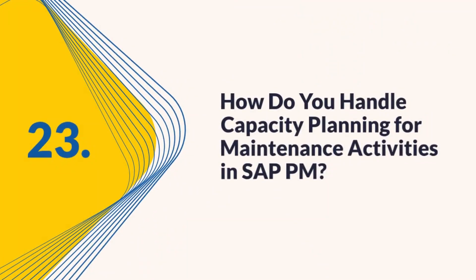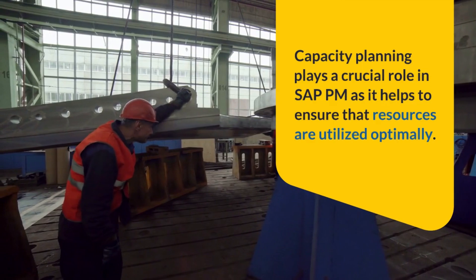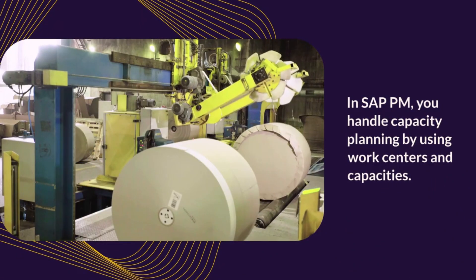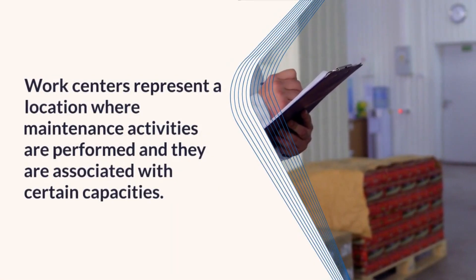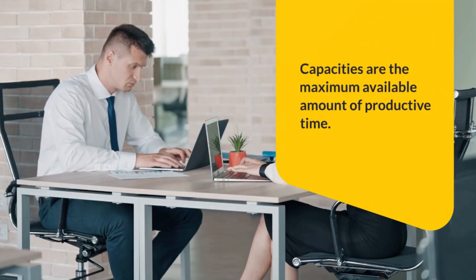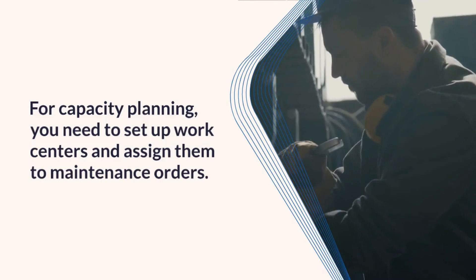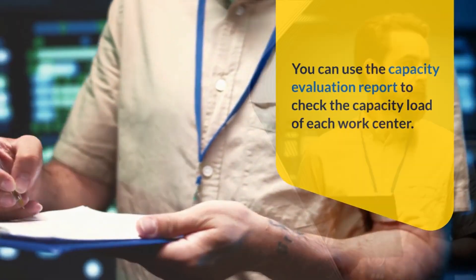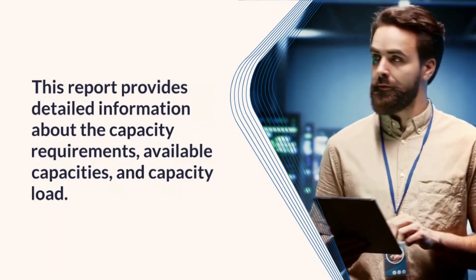Question 23: How do you handle capacity planning for maintenance activities in SAP PM? Capacity planning plays a crucial role in SAP PM to ensure resources are utilized optimally. You handle capacity planning by using work centers and capacities — work centers represent locations where maintenance activities are performed and are associated with certain capacities, which represent the maximum available amount of productive time. For capacity planning, set up work centers and assign them to maintenance orders. Use the capacity evaluation report to check the capacity load of each work center, providing detailed information about capacity requirements, available capacities, and capacity load.